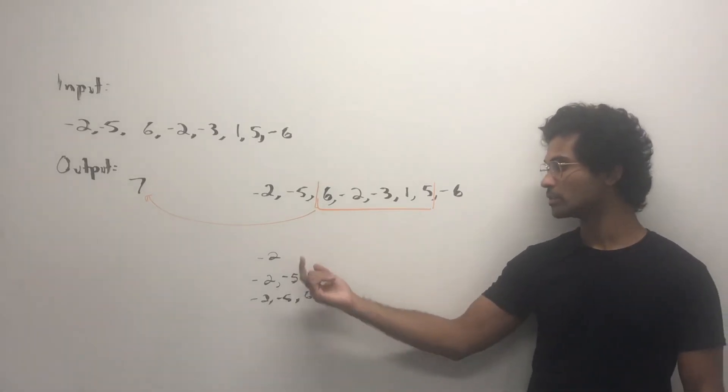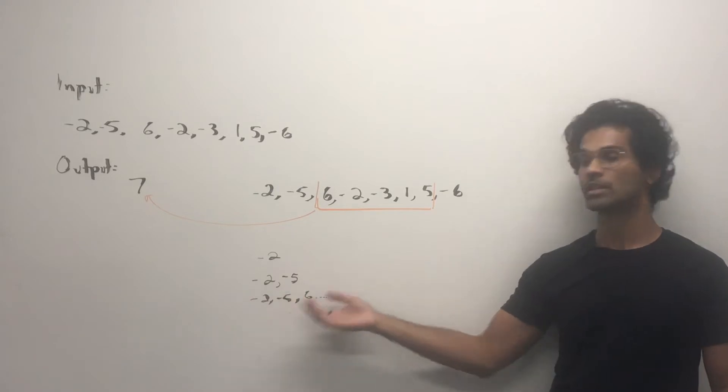A valid subarray can be one number or two numbers as long as they're contiguous. So it can be just a negative two, it can be negative two, negative five, or it can be negative two, negative five, six, and so on.